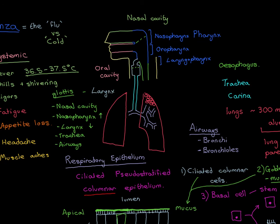We have two more types of epithelia to discuss: the non-keratinized squamous stratified epithelium lining the oral cavity, bottom nasopharynx, oropharynx, laryngopharynx, esophagus, and top larynx; and the epithelium of the alveoli. We'll cover those in the next video, starting with the non-keratinized squamous stratified epithelium and then the alveolar lining.